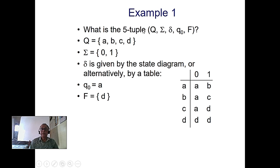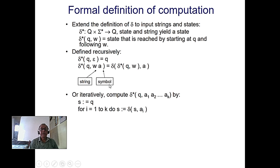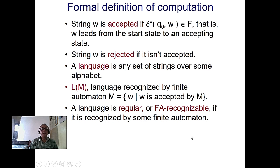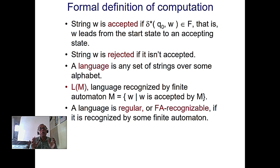This transition table shows the states and symbols — given a state and a symbol, you look up which state the machine goes to. If a string does not end in an accepting state (double circle), the string w is rejected. Here, w, x, y, z denote strings — strings of terminals means strings of symbols like a, b, c or 0, 1.